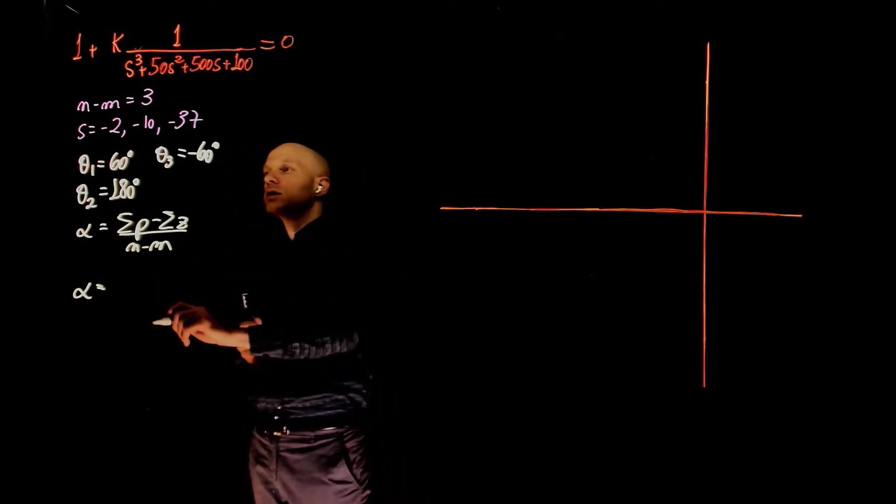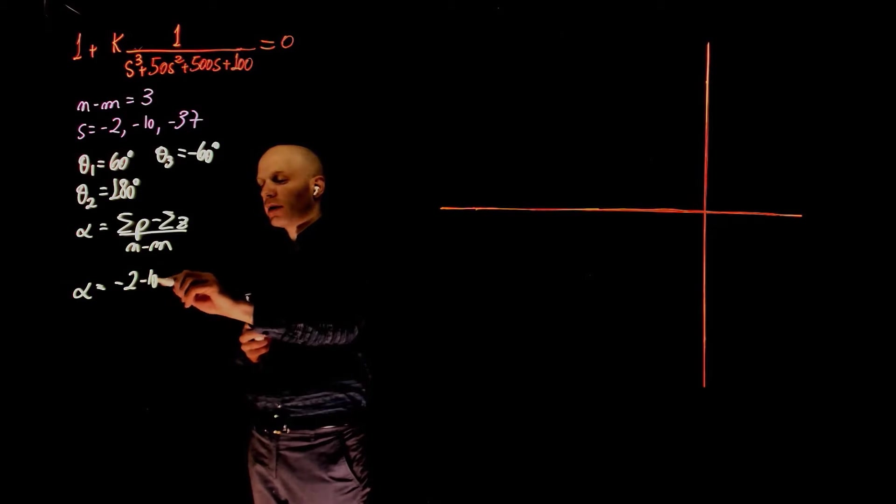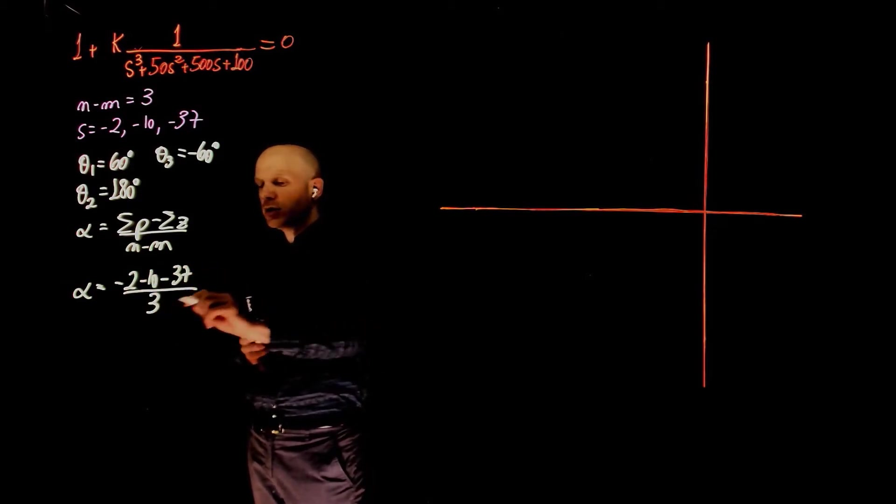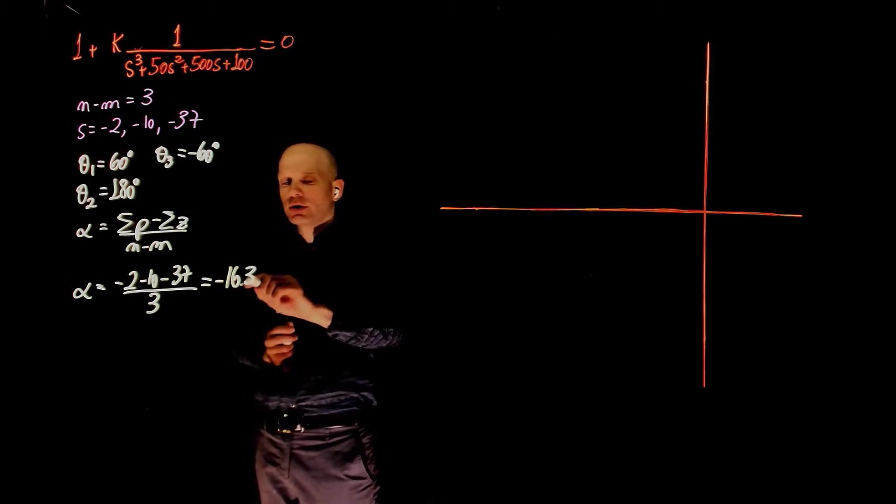And this is negative 2, negative 10, negative 37 divided by 3, which is negative 16.33.